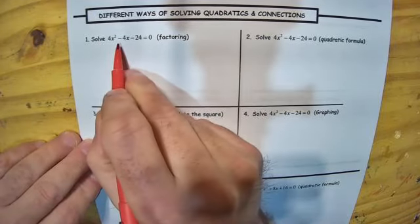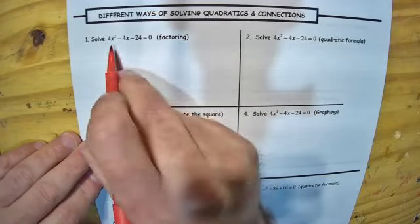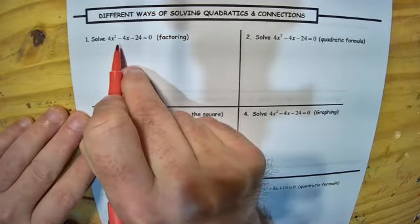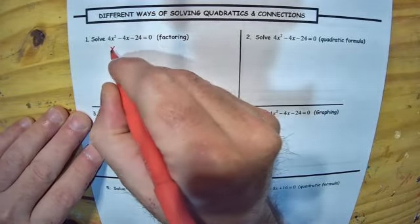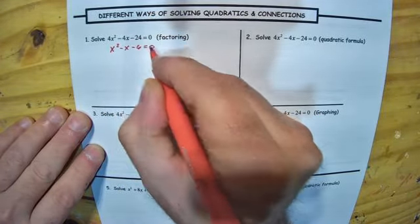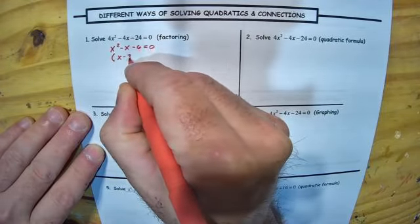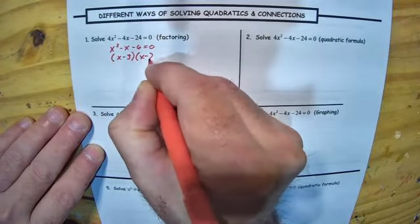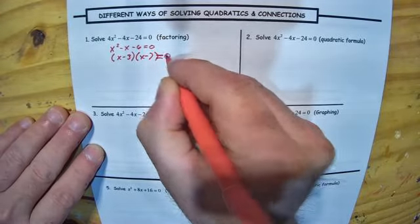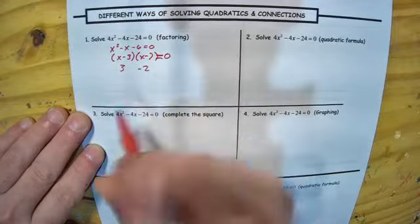The first problem — if I want to solve this, the first thing I want to do is divide everything by 4, because that's the greatest common factor. If we factor out the 4, we have x squared minus x minus 6 equals 0. And factoring that, it's x minus 3 times x plus 2 equals 0.